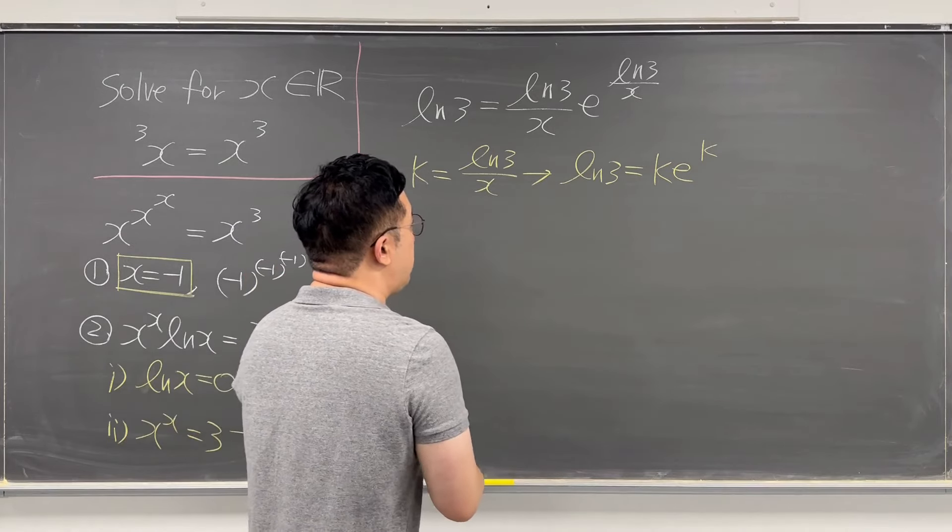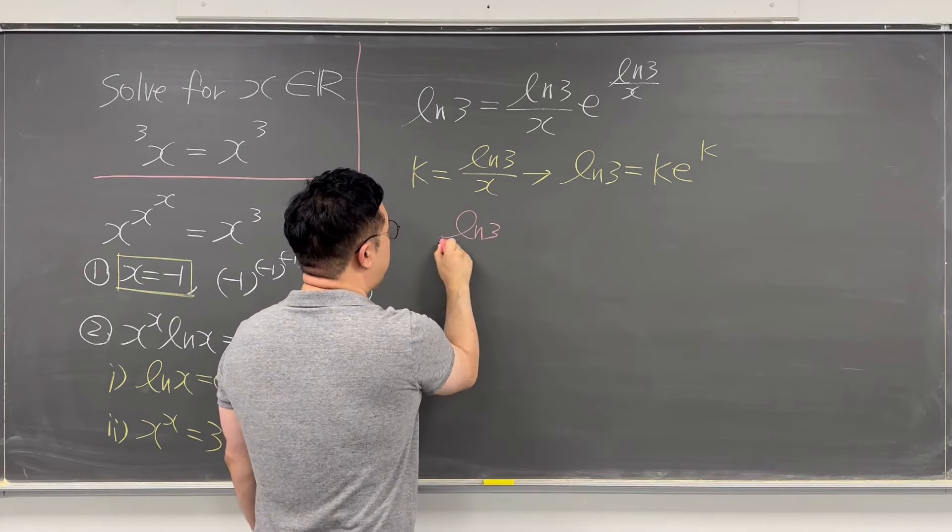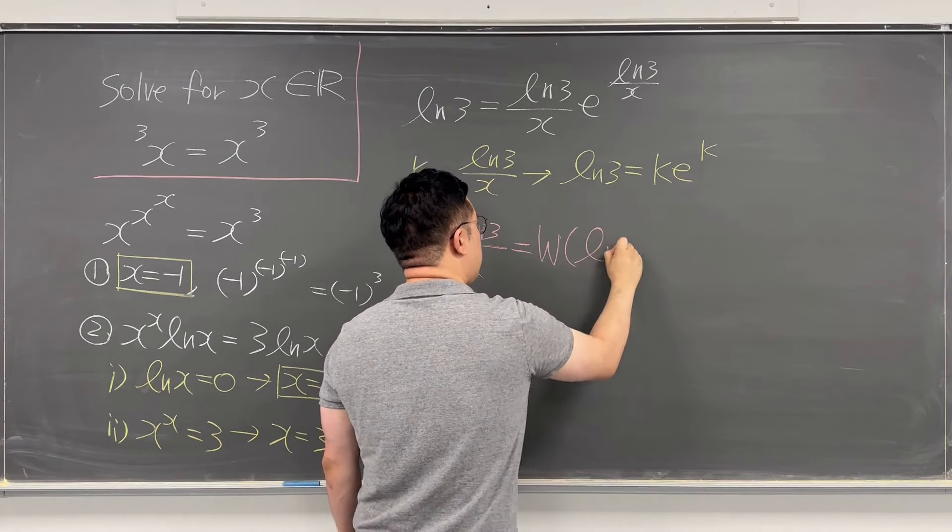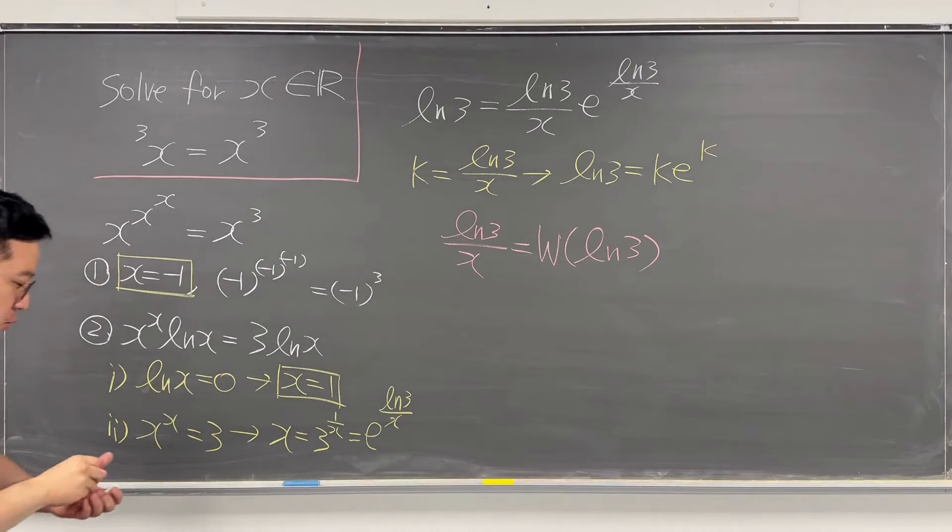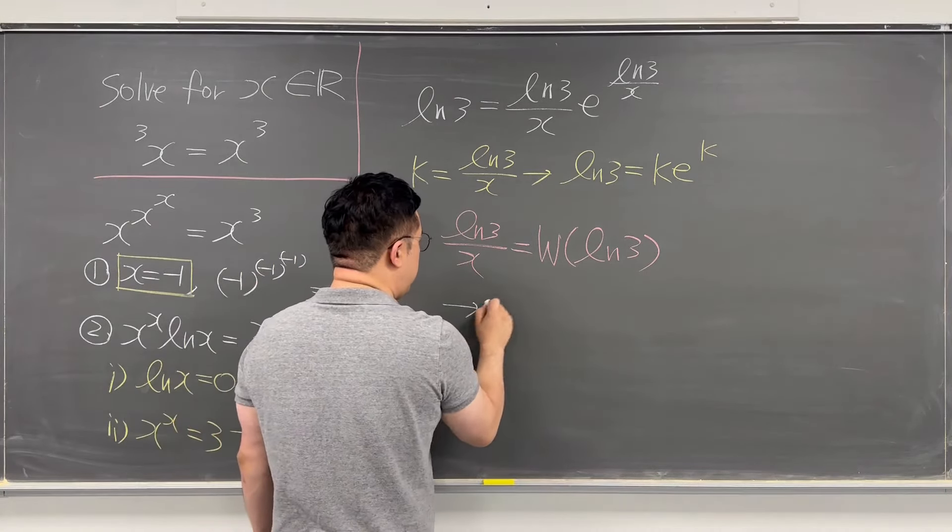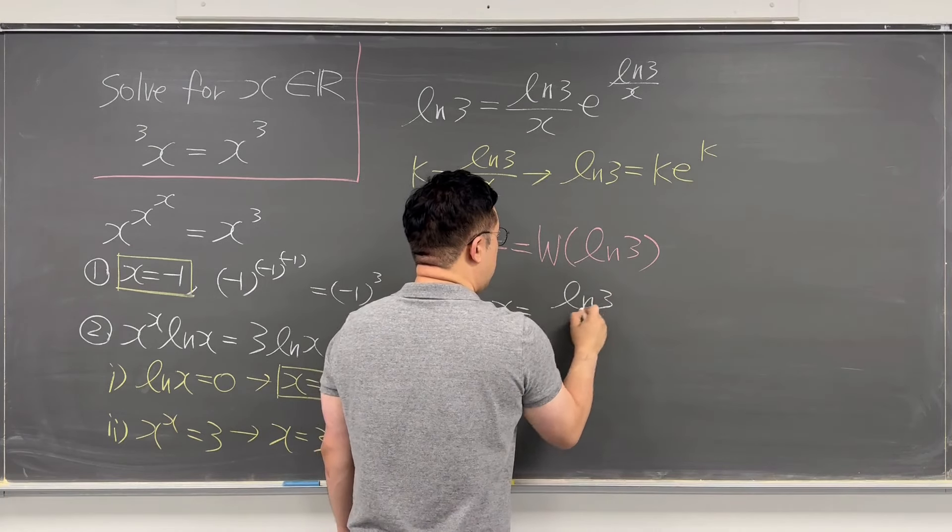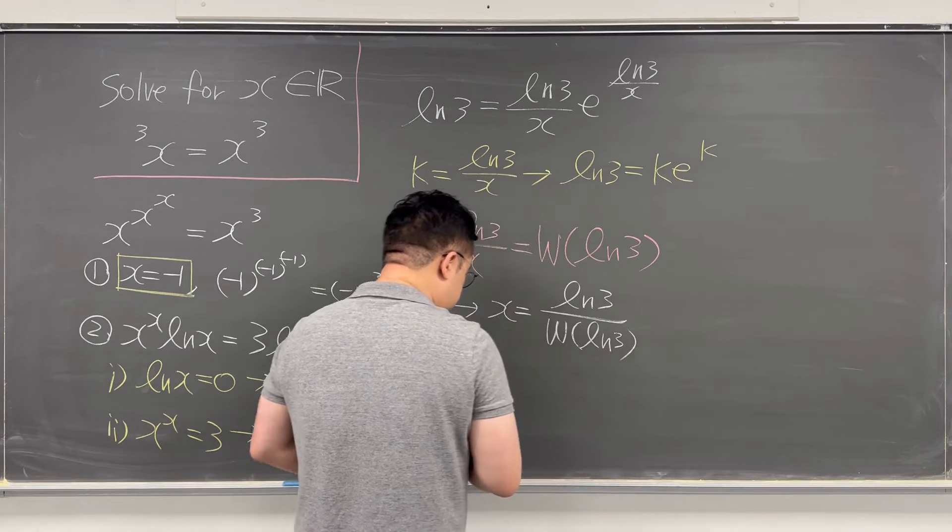So from this, we can now talk about ln 3 over x. That is going to be just the Lambert W of ln 3. So that is why the remaining x value is equal to ln 3 over Lambert W of ln 3. This is the last solution.